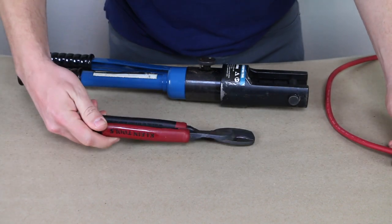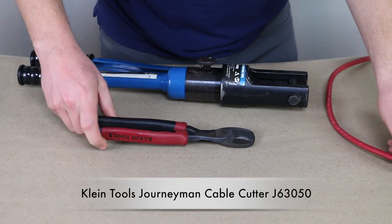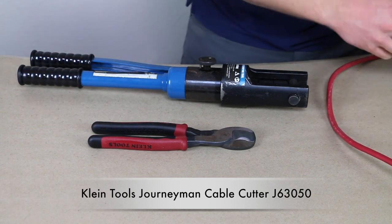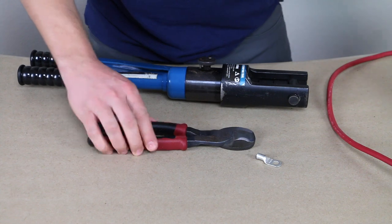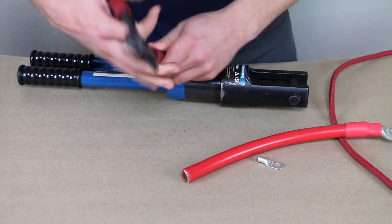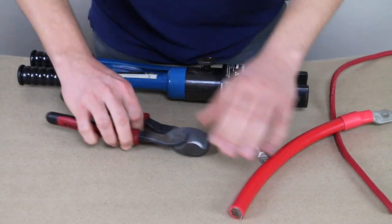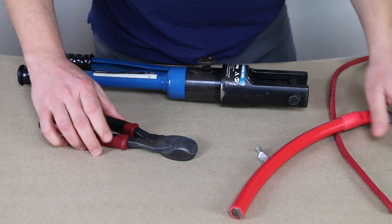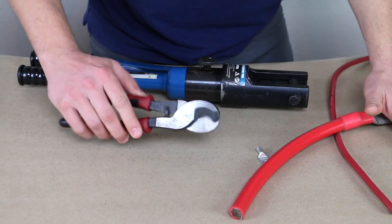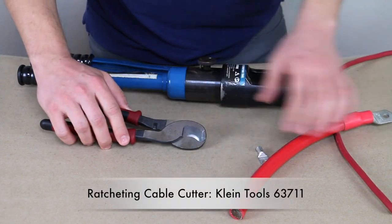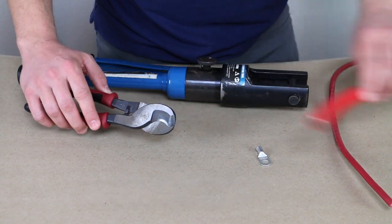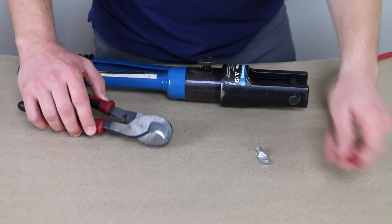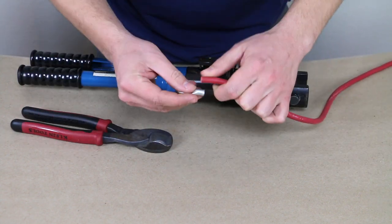These are Klein cable cutters. I'll go ahead and throw that model number there at the bottom of the screen. Highly recommended. These will cut up to two-aught cable, so they won't quite cut the four-aught. For that, you would need the ratcheting cable cutters. These are about 30 bucks and the ratcheting ones are 230 bucks. So a little more expensive to work with that four-aught cable, but they work great for two-aught and below.